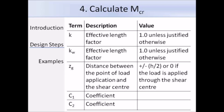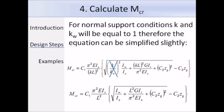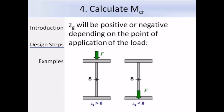Since K and K_W are normally taken as equal to 1, the equation can be simplified slightly by removing those terms. Regarding Z_g: if the load is applied to the top of the top flange of a simply supported beam, it is destabilizing and the value will be positive. If the load is applied below the shear centre, it will be stabilizing and the value will be negative. If the load is applied at the shear centre, it is neither stabilizing nor destabilizing and Z_g should be taken as 0.